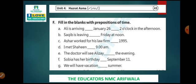Number C: Asher worked for his law firm in 1995 — he was working in 1995 (May, kaam karta tha). Number D: I met Shaheen at 9 a.m. — with time, we use 'at.' Number E: The doctor will see Ali in the evening — 'in the evening.' Number F: Sobhya has her birthday on September 11th — 'on September 11th.' Number G: We will have vacation in summer — 'in summer.'